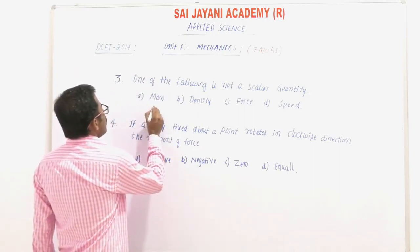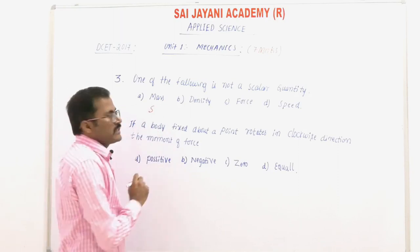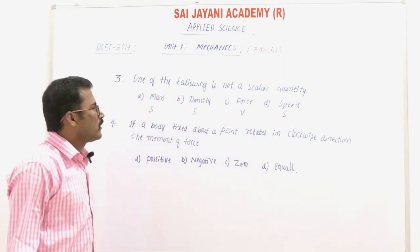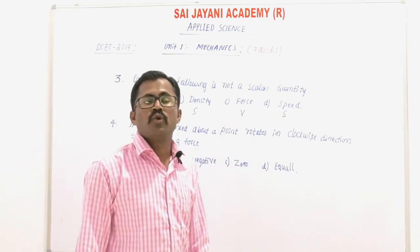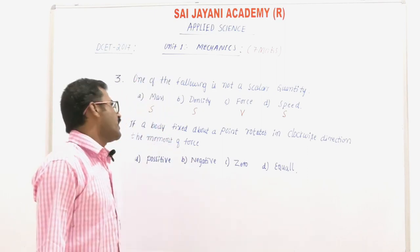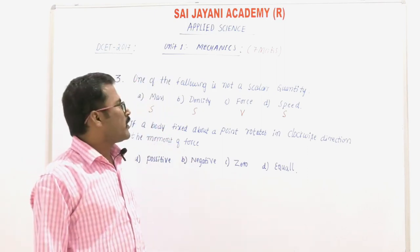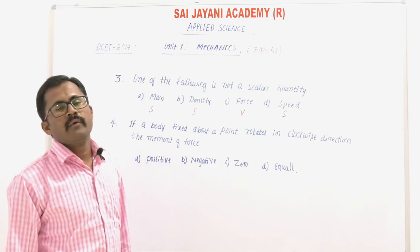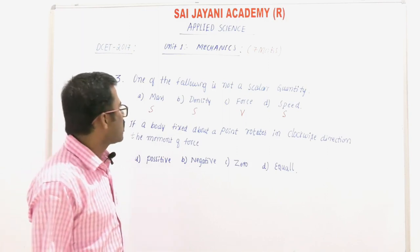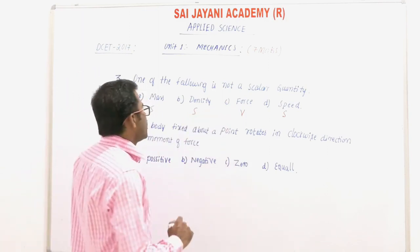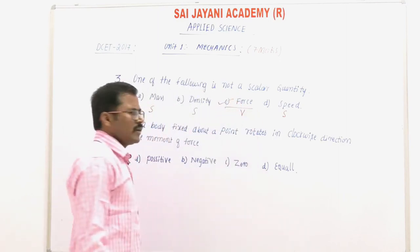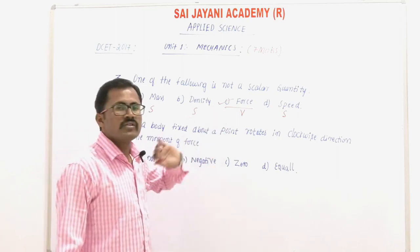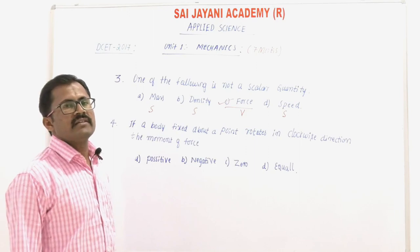Mass is a scalar quantity, density is a scalar quantity, speed is also a scalar quantity, but force is a vector quantity. A quantity which has both magnitude and direction is called a vector quantity. A scalar quantity has only magnitude but no direction — such as mass, density, and speed. So force is not a scalar quantity; option C is the right answer.